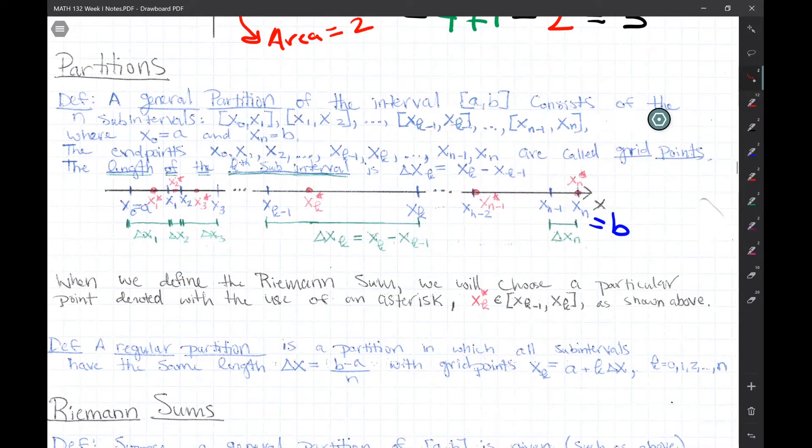But that's for later use. For now, just focus on the blue. These are the grid points, and between the grid points are the sub-intervals. They don't have to have the same length in general when we're dealing with a general partition.